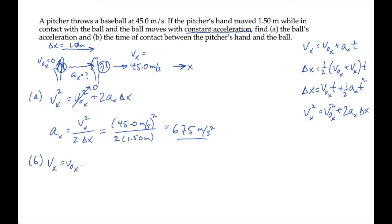Let's start with the first one: v_x equals v_0x plus a_x times t. The ball starts from rest, so the time that the ball is in the pitcher's hand is the final velocity divided by the acceleration. That's 45 meters per second divided by 675 meters per second squared. So when you put that into your calculator, you get 6.67 times 10 to the minus two seconds. 66.7 milliseconds is how long it took the pitcher to be in the act of throwing the ball.